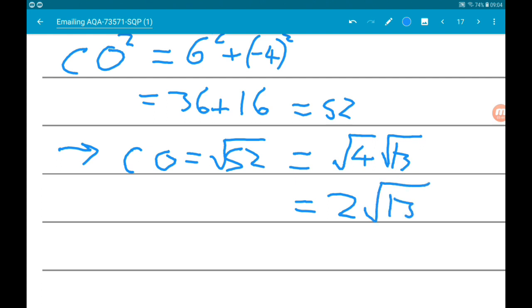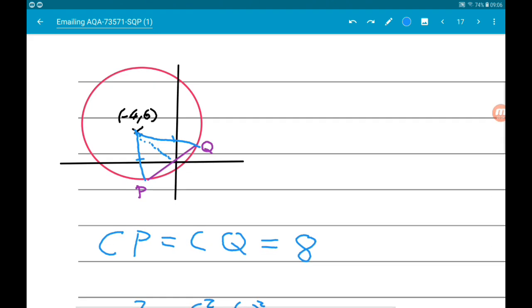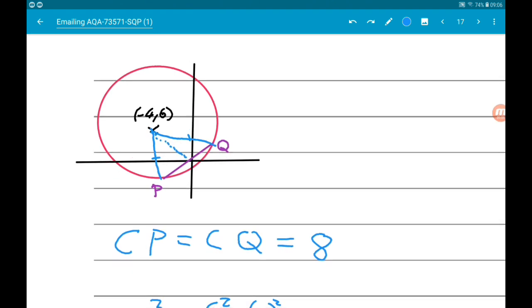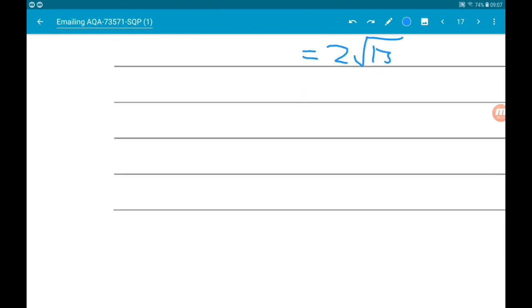So we now know the length CO. Okay so at this point I am now going to make another little sketch of this triangle CPQ. So there it is. So we got C, P, Q.